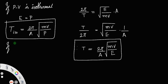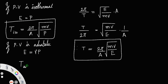Now, if the PV process is adiabatic, then the bulk modulus is equal to gamma times P, where gamma is the specific heat capacity ratio of gases. Then you can write T adiabatic equals 2 pi divided by A, times the square root of M V divided by gamma P.